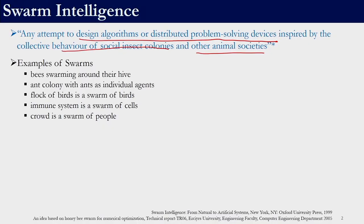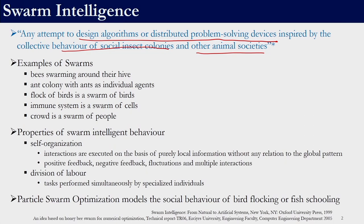Examples of swarms are: bees swarming around their hive, ant colony with ants as individual agents, flock of birds as a swarm of birds, immune system as a swarm of cells, and a crowd as a swarm of people. Any algorithm designed with this as its inspiration is a swarm intelligence algorithm. The two properties of swarm intelligence behavior are self-organization and division of labor.